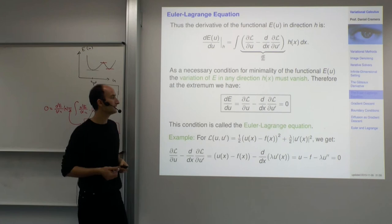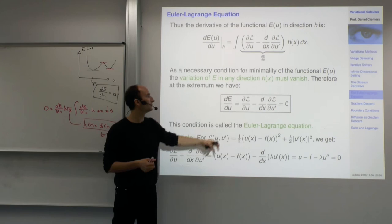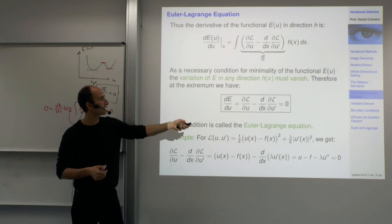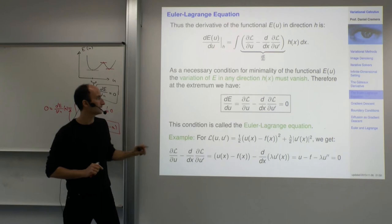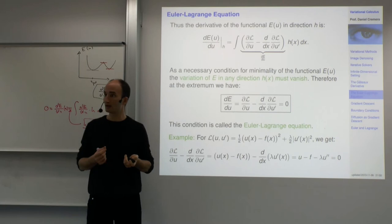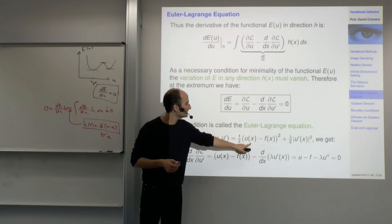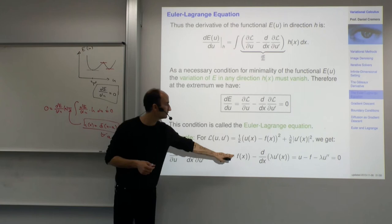The nice thing about variational calculus is that the extremality principle can be read off almost directly. You compute dL by du minus d by dx of dL by du prime and set it to zero. In this calculation, you treat u and u prime as independent variables. The derivative dL by du just gives u minus f.